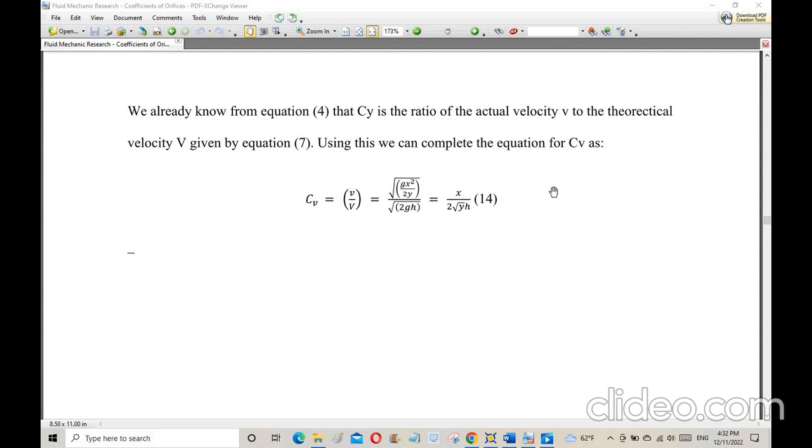When we plot the experimental points, the x value of each point goes to the y-axis, and on the x-axis we plot 2 times square root of y times h. The line that connects all the points should have a slope that equals Cv or should be very close to the coefficient of velocity.